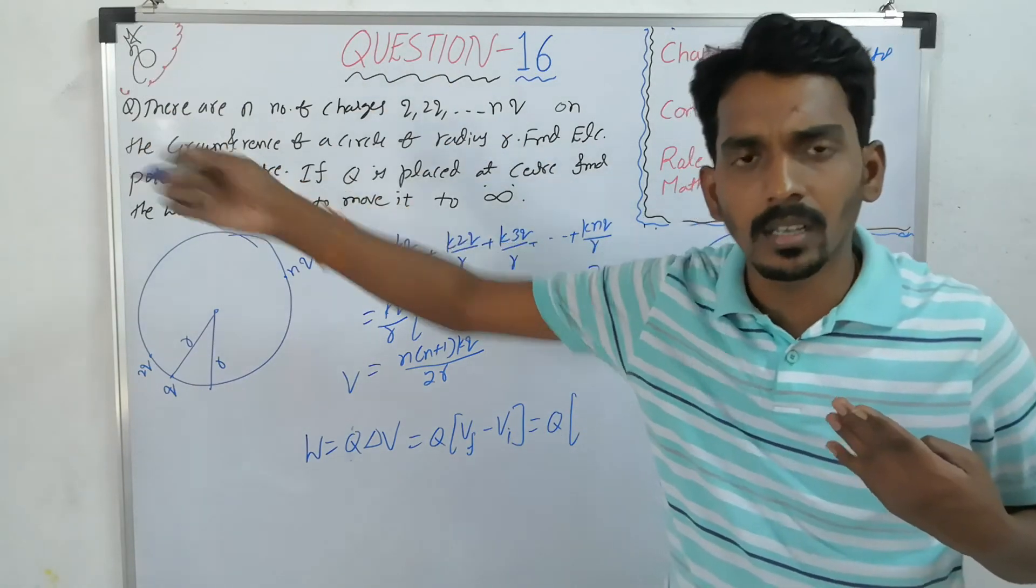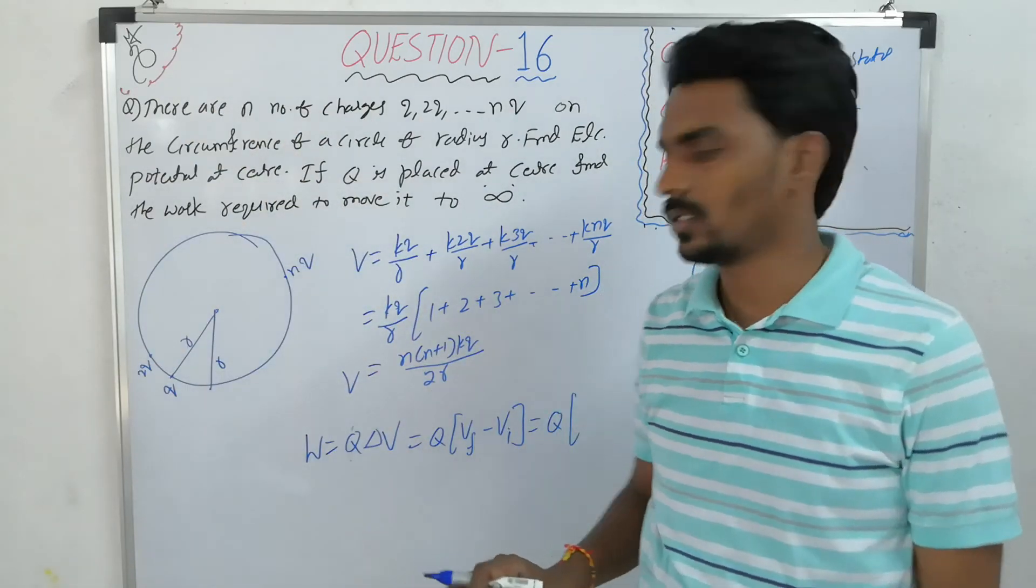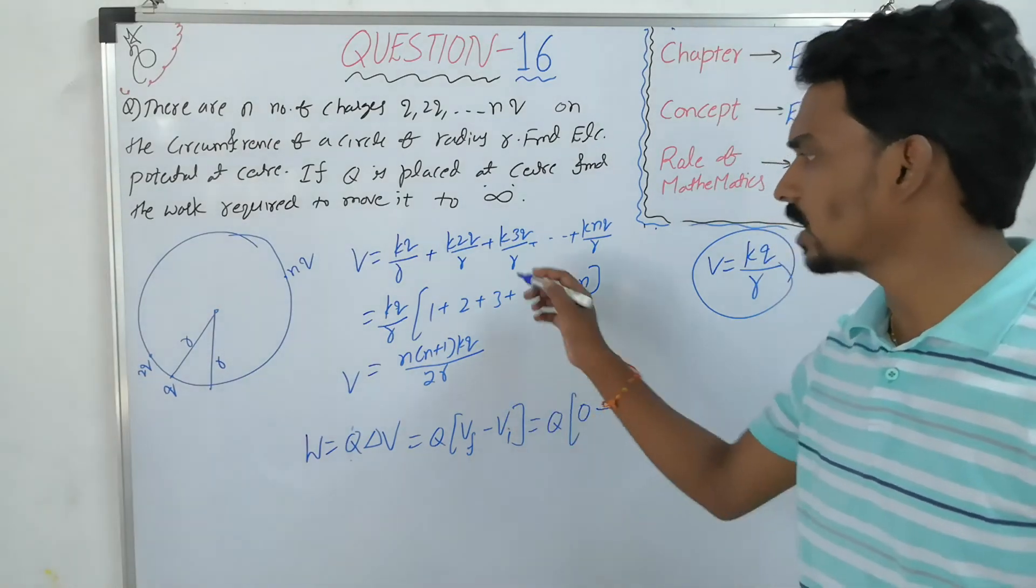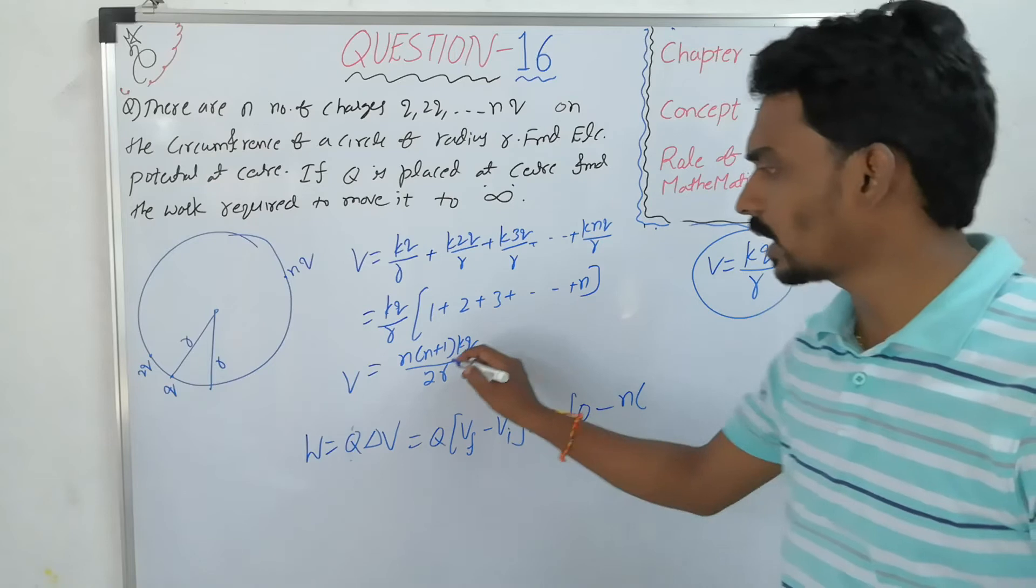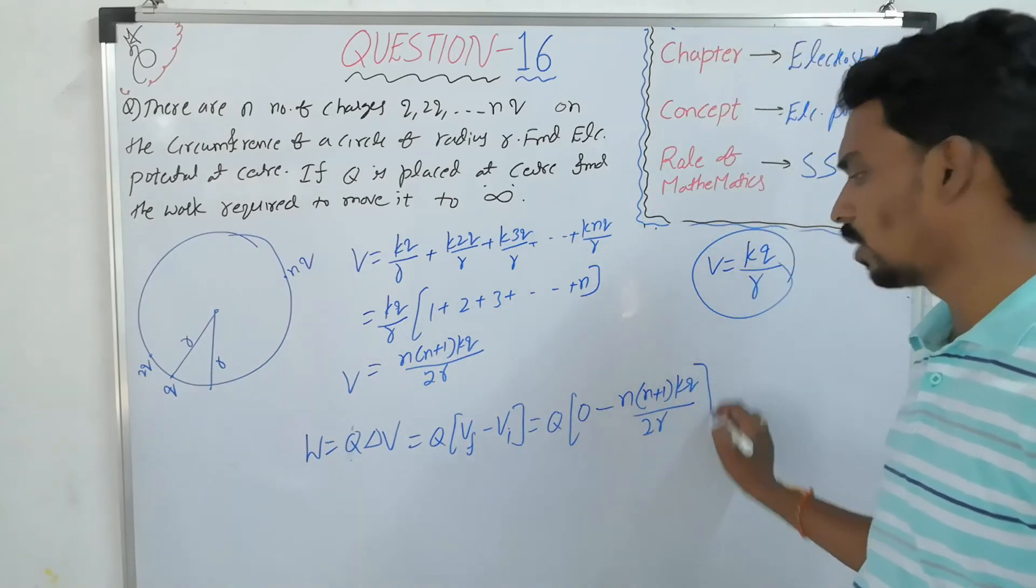What is the final potential? You are moving to infinity. At infinite separation, no interaction. So the final potential is zero. What is the initial potential? Already we calculated: N times (N plus 1) times KQ by 2R.